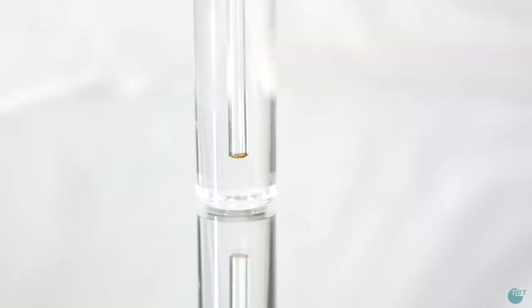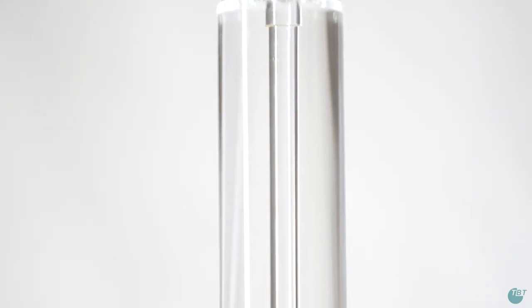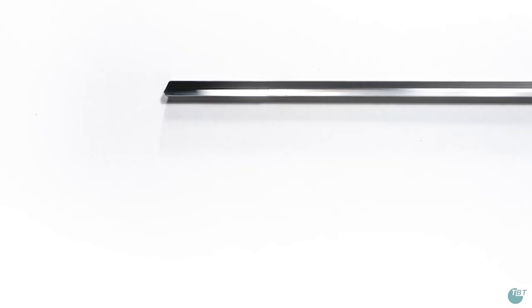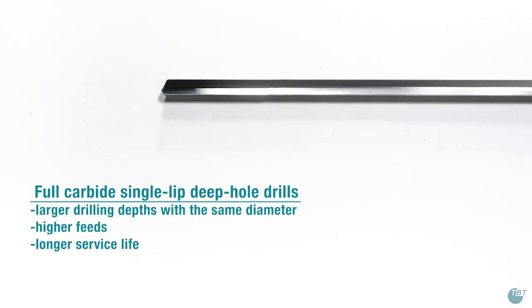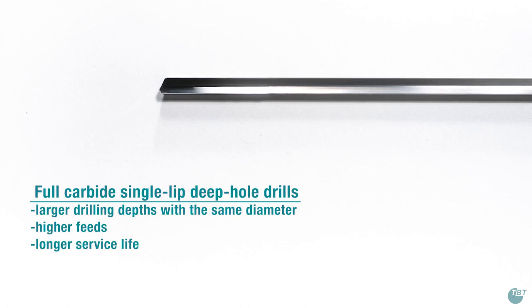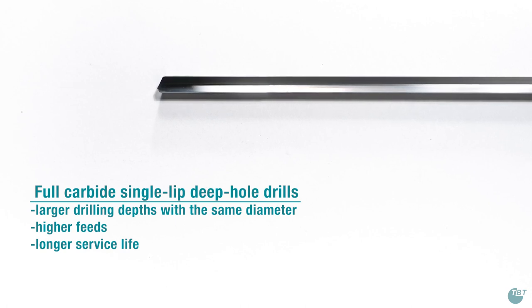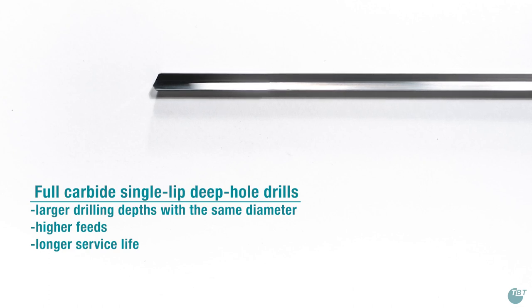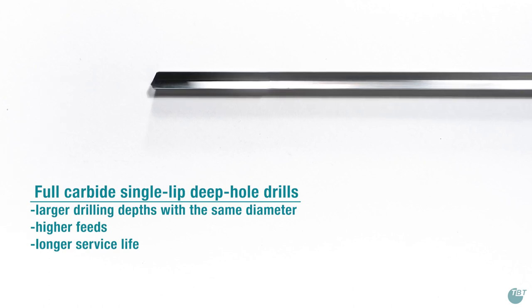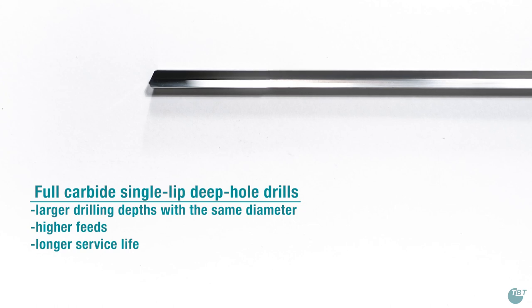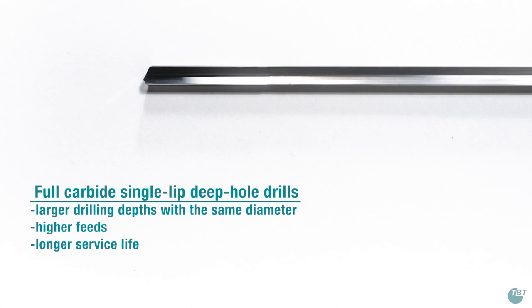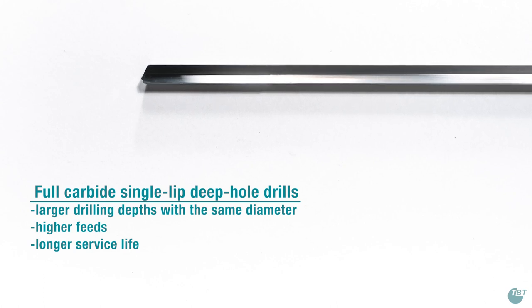With this method, you achieve the highest deep drilling precision on machining centers. As an alternative to our TBT single lip deep hole drills with their braced carbide heads, our TBT full carbide single lip deep hole drills can also be used on machining centers. With our full carbide tools, larger drilling depth and also length to diameter ratios can be achieved with just one tool.